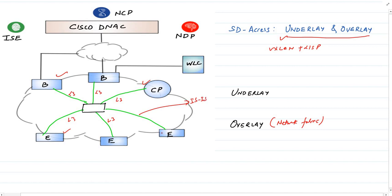The routing protocol which runs on these L3 links is IS-IS. It is not necessary that you need to run IS-IS as a routing protocol in underlay, but the solution recommends this protocol.